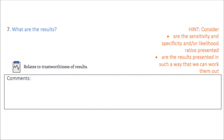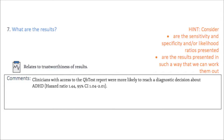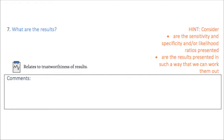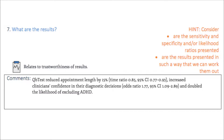The authors present results that clinicians with access to the QB test report were more likely to reach a diagnostic decision about ADHD. At six months, 76% of those with a QB test report had received a diagnostic decision, compared with 50% without the report. The QB test reduced appointment length by 15%, increased clinicians' confidence in their diagnostic decisions, and doubled the likelihood of excluding ADHD. The diagnostic accuracy between groups was compared using receiver operating characteristic curve modelling — a common measure for diagnostic accuracy — which is useful for evaluating the performance of diagnostic tests that classify individuals into those with and without a condition. The authors found that there was no difference in diagnostic accuracy.